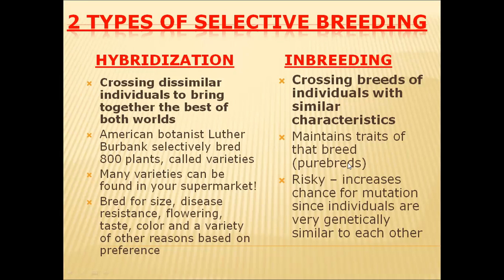If a breed is crossed with another organism, dilution of characters will take place. To prevent dilution of best qualities, the best animals are allowed to inbreed only. However, inbreeding is risky in some instances because offspring may develop genetic diseases. Most genetic diseases are recessive in nature, and homozygous recessive organisms are very common in inbreeding experiments.